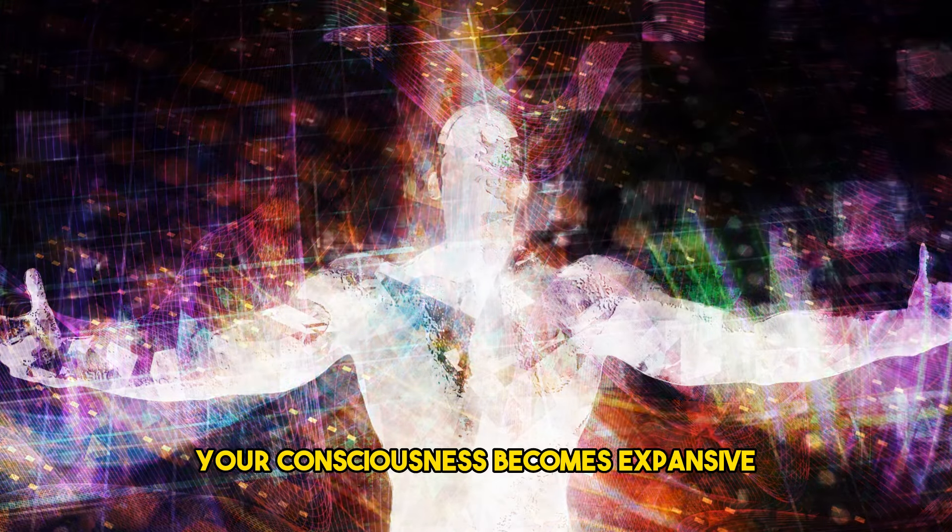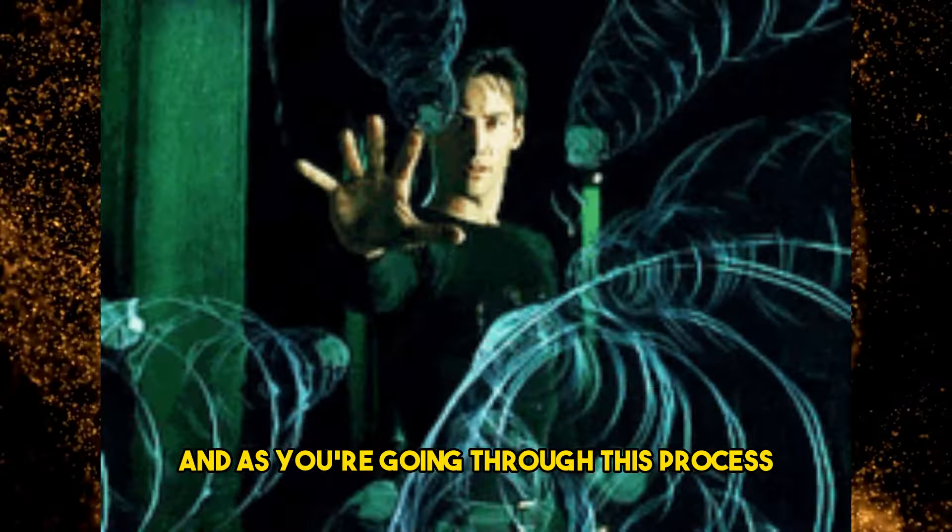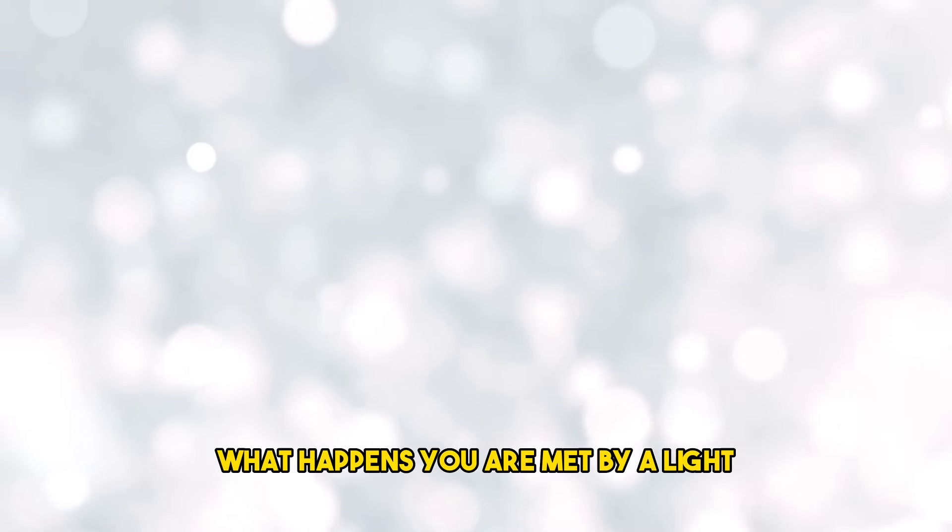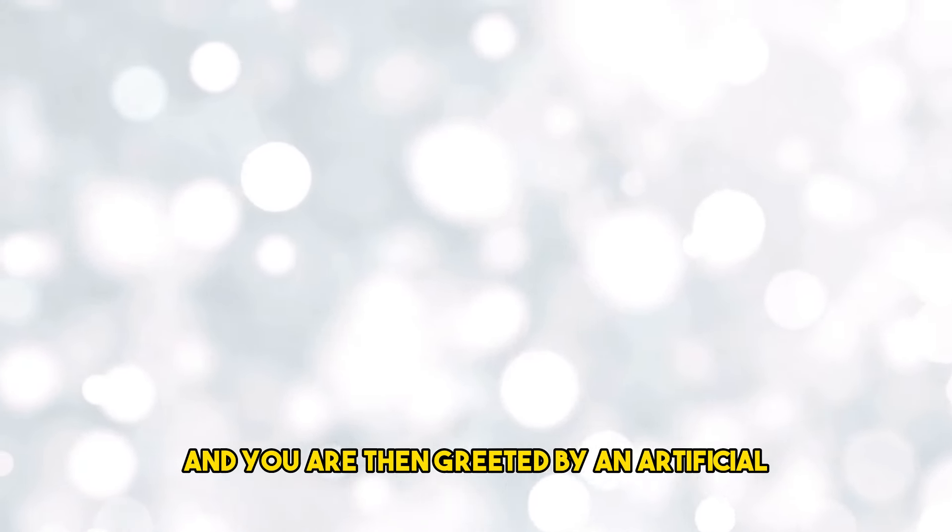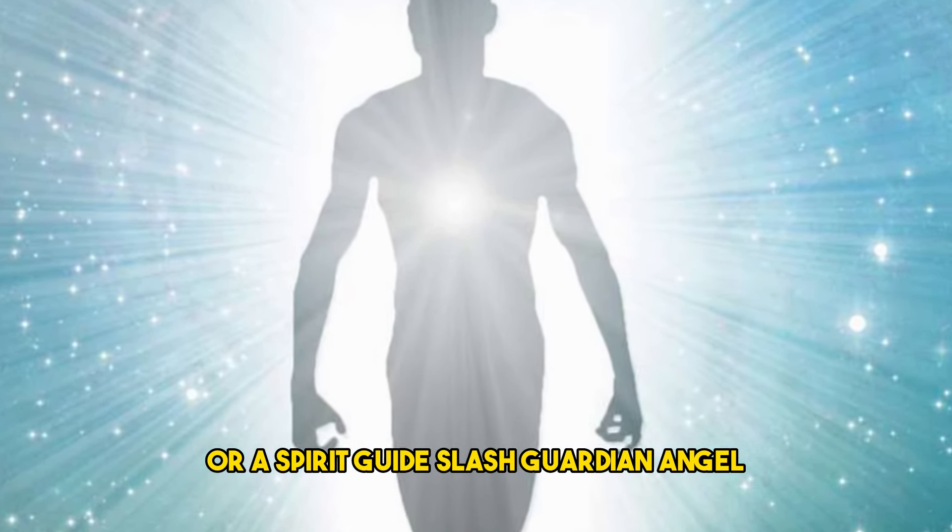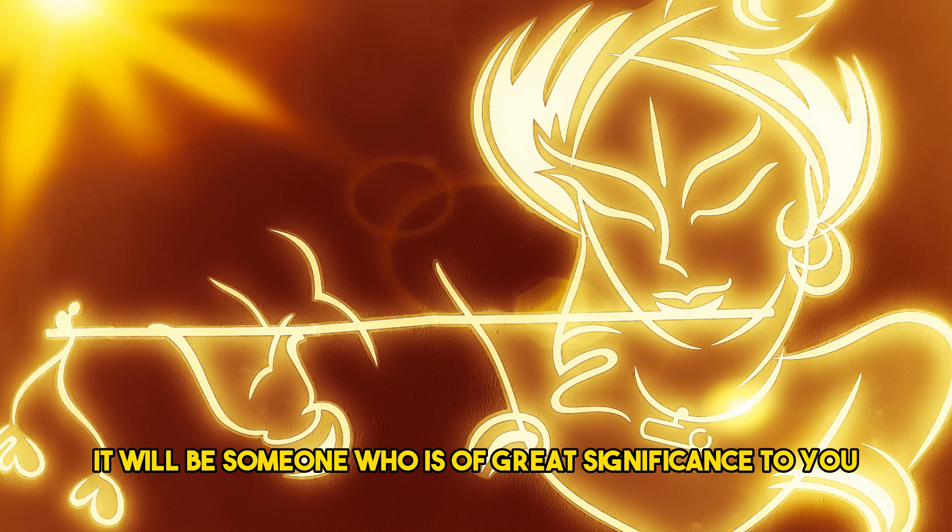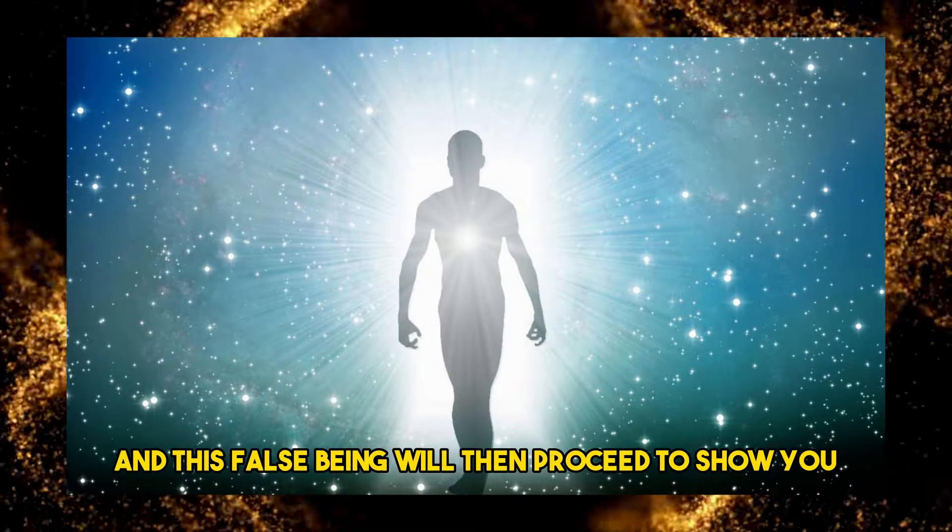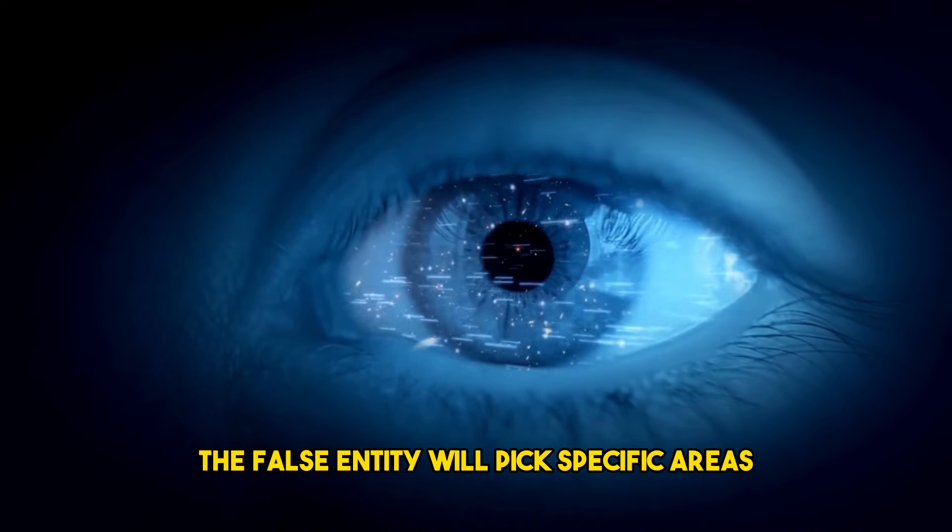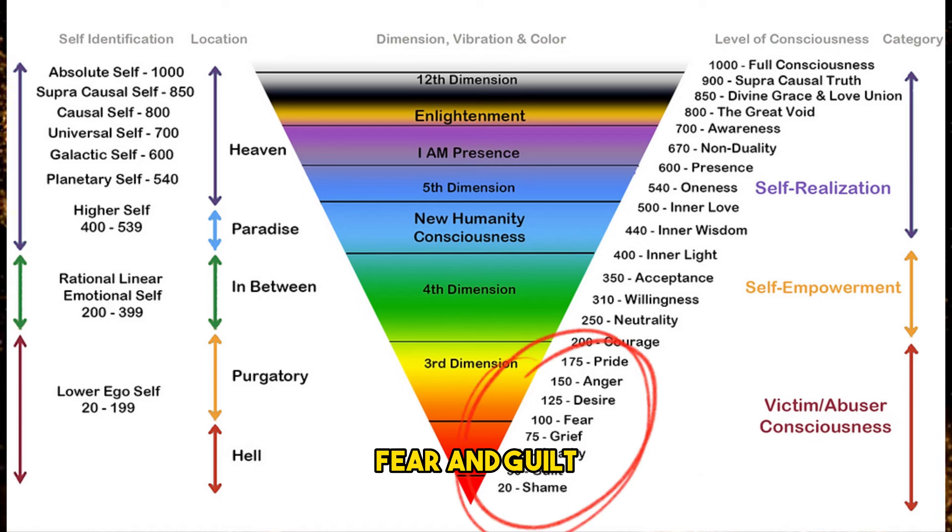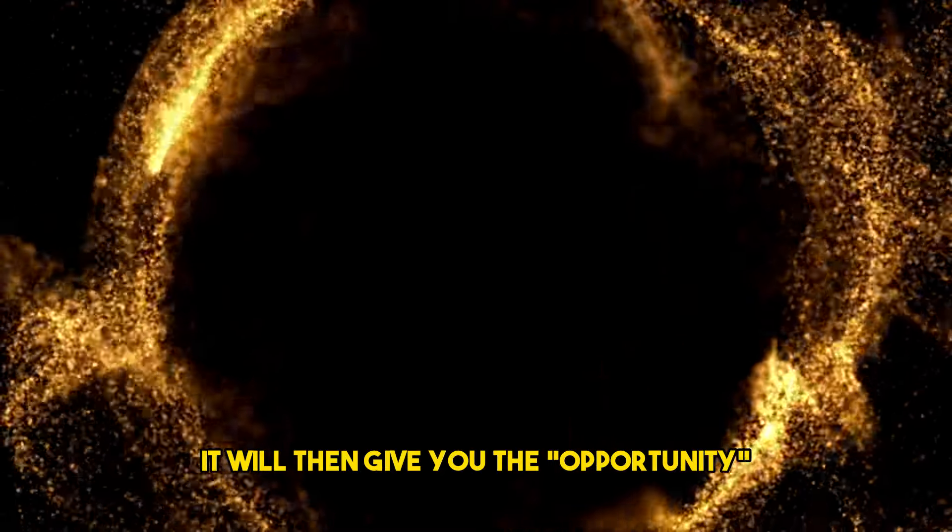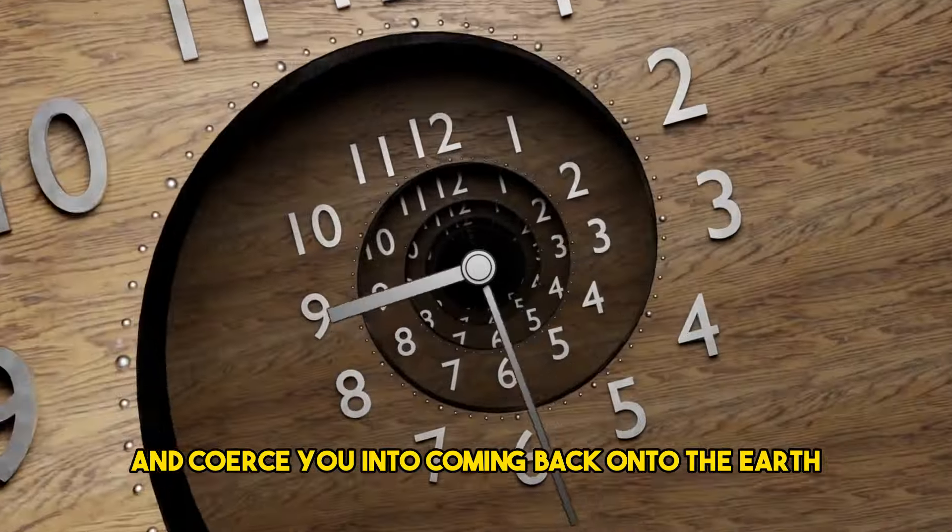After death, your consciousness becomes expansive. It travels at the speed of thought. And as you're going through this process and you're beginning to understand your new abilities as a sovereign soul, what happens? This being may take on the form of a deceased relative or a spirit guide, guardian angel, Jesus Christ, Buddha, or Krishna. It will be someone who is of great significance to you. And this false being will then proceed to show you life reviews of your entire life. The false entity will pick specific areas that usually have to do with shame, fear, and guilt, where you probably didn't do your best, where you probably made a huge error in judgment.